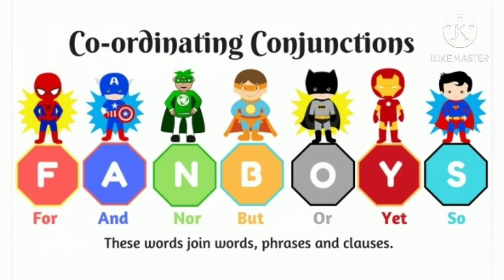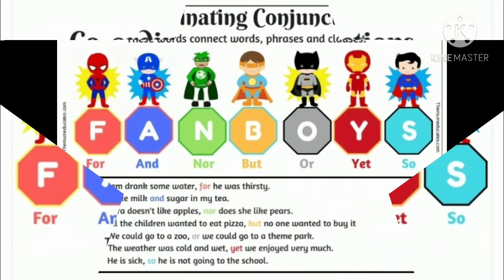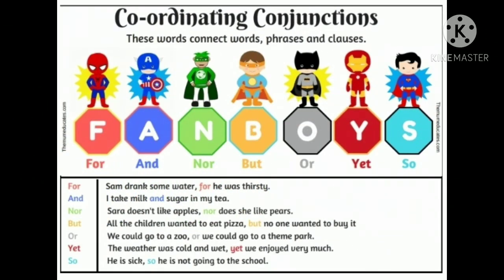Coming to the examples of coordinating conjunctions, the acronym used here is FANBOYS, where F stands for 'for', A for 'and', N for 'nor', B for 'but', O for 'or', Y for 'yet', and S for 'so'. Now let's understand through some examples: Sam drank some water, for he was thirsty. I take milk and sugar in my tea. The remaining examples you can read as given.